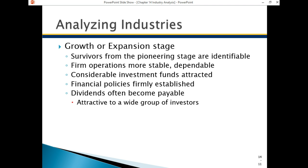Survivors from the pioneering stage, if they're lucky enough to make it into the growth or expansion stage, that's where a lot of the money is. That's where companies first go IPO, and a lot of interest and appreciation of stock price develops in the growth and expanding phase. Operations become more stable, it's easier to attract investment funds for IPOs or bonds, and companies really become a lot bigger in this phase.